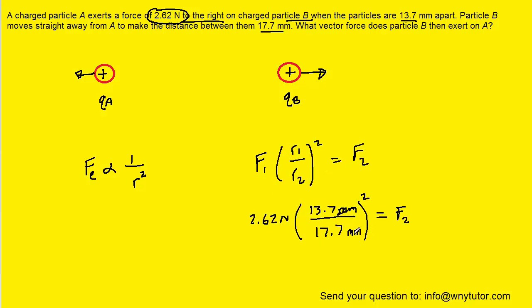Notice that in our setup, the millimeters will cancel out. And then when we perform this computation, we should get roughly 1.57 newtons. We'll notice that the force has diminished, which makes sense because the particles are moving farther apart.